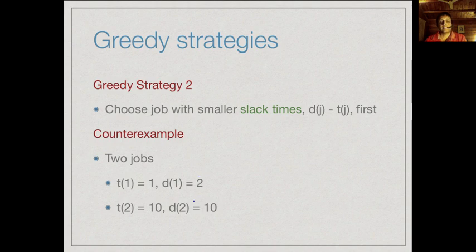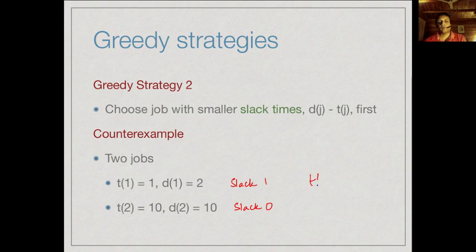Consider a similar example where the deadline of the first job is now 2. We have slack 0 for the second job and slack 1 for the first job — the second one has a deadline equal to its time, the first one has a deadline which is 1 more than its time. By this strategy, we would pick job 2 first.